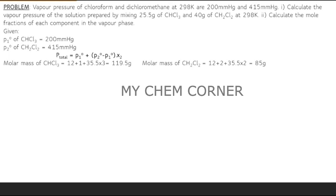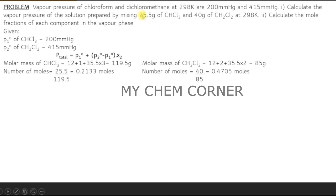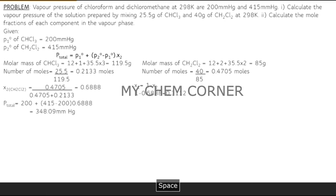With the number of moles known, calculate x2: mole fraction of CH₂Cl₂ = moles of CH₂Cl₂ ÷ total moles of solution. Now substitute back: p-total = 200 + (415 − 200) × x2, which gives us the total vapor pressure. This answers the first question.